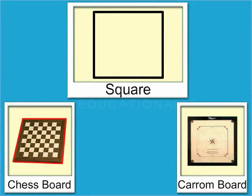You can see that the chess board and carom board have the same shape. What is this shape called? It is called square.